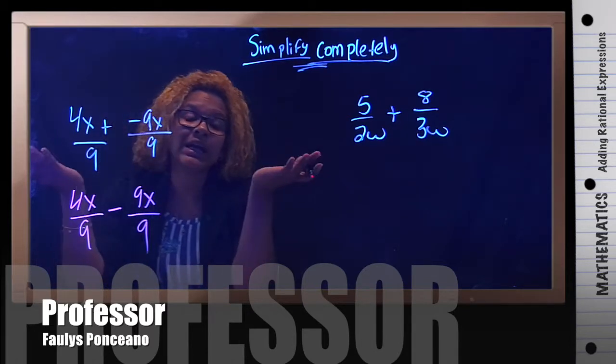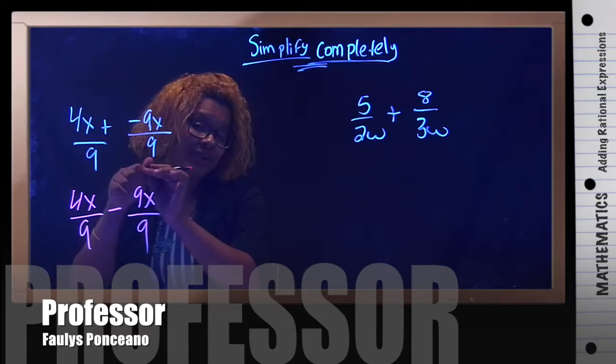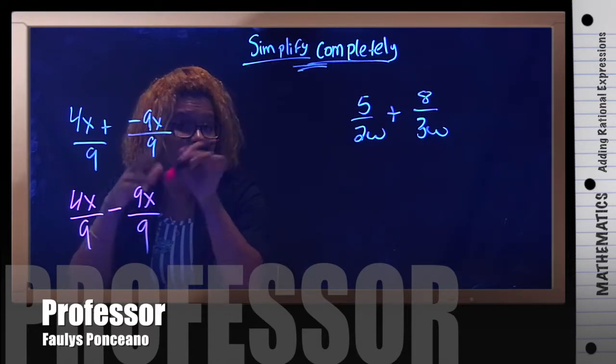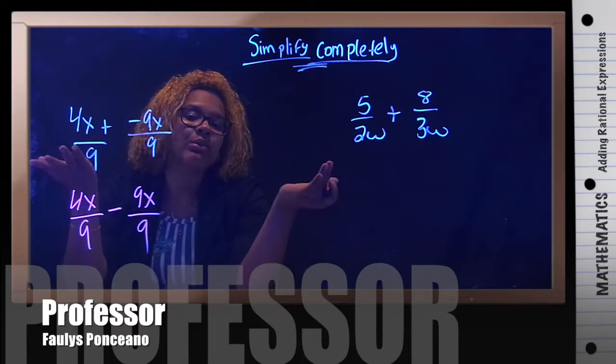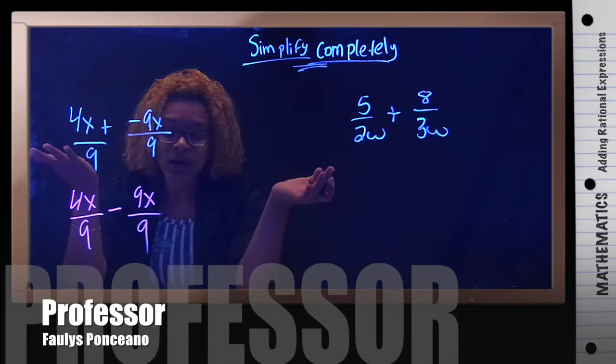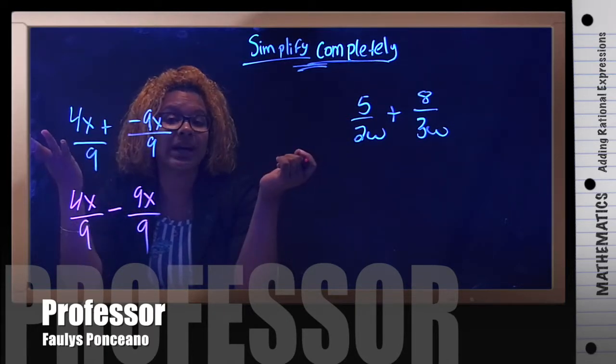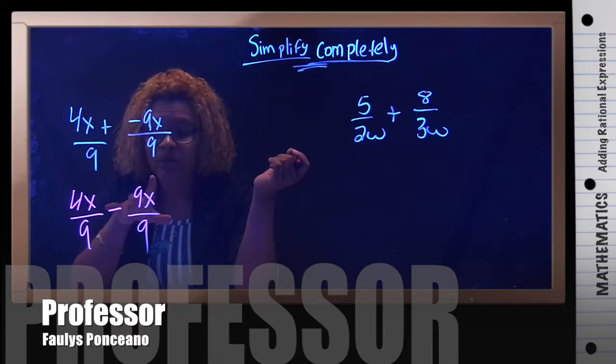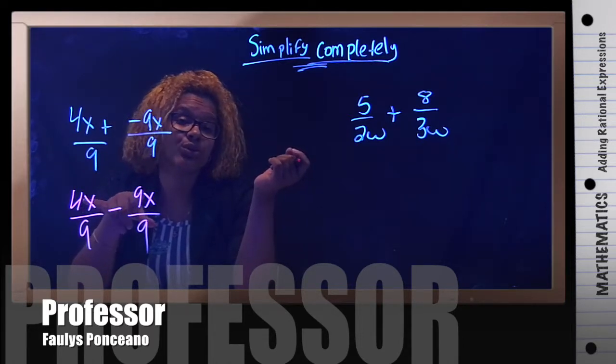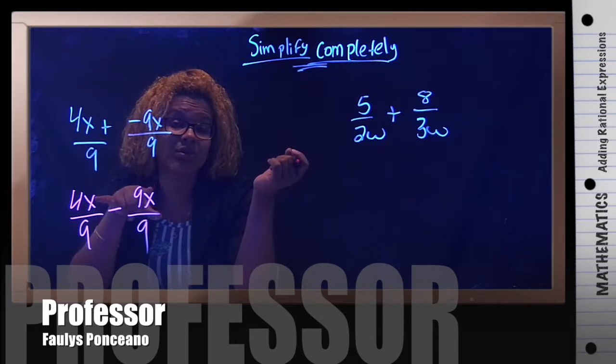And then when you're adding or subtracting fractions, what must you have in order to add them or subtract them? The denominator has to be the same. In this case, it is 9 and 9, so you can automatically go ahead and subtract. Now because you have variables in the top, in order for you to subtract this, the variables have to be the same and to the same power.